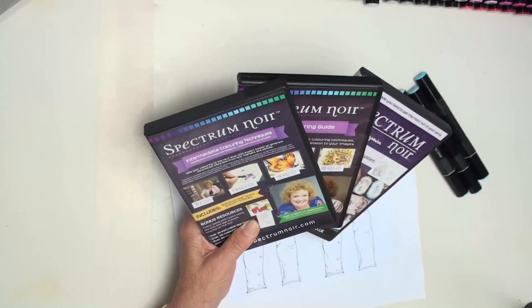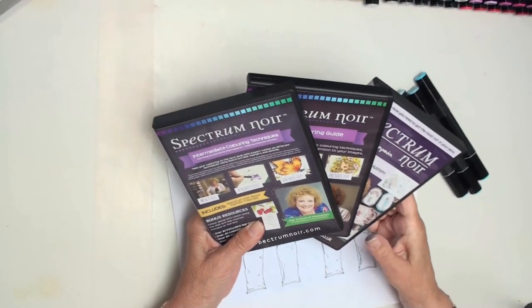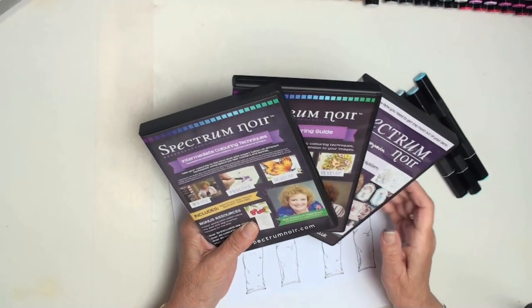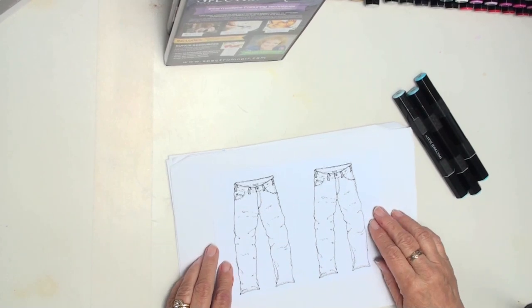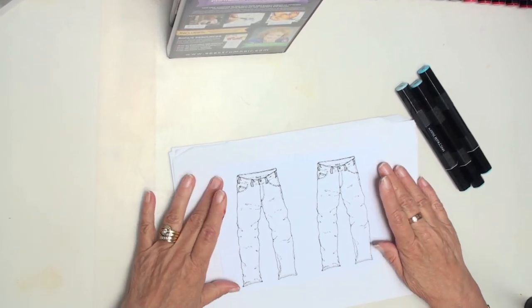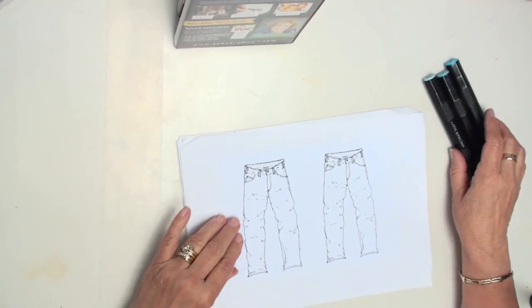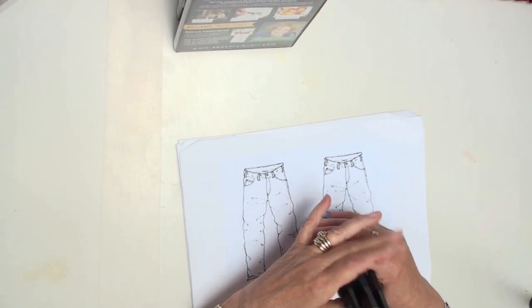Hi everybody, it's Christina from Spectrum Noir. Spectrum Noir have brought out lots of CDs that will help you develop your own coloring style. From these CDs there's lots of images that you can print off. Now this set of jeans is from one of the CDs and I'm going to color this with the blues and I'm going to use the brush nibs.